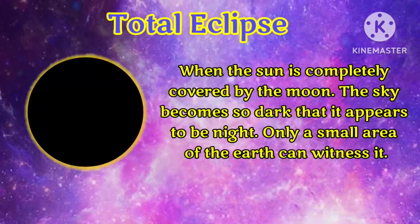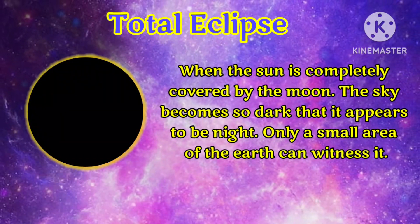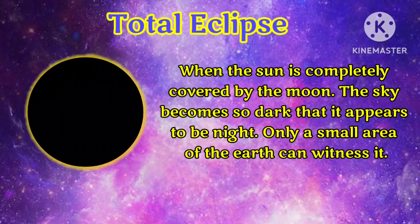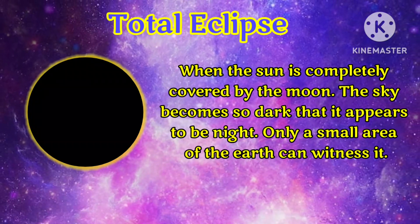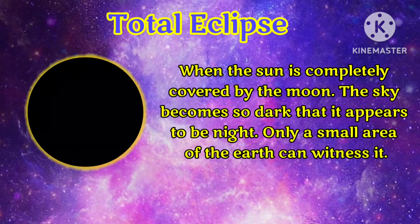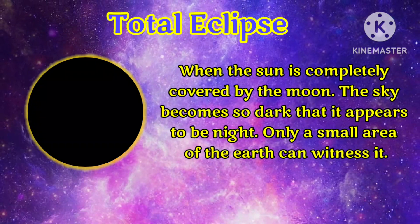A total eclipse is when the sun is completely covered by the moon. The sky becomes so dark that it appears to be night, and only a small area of the earth can witness it.